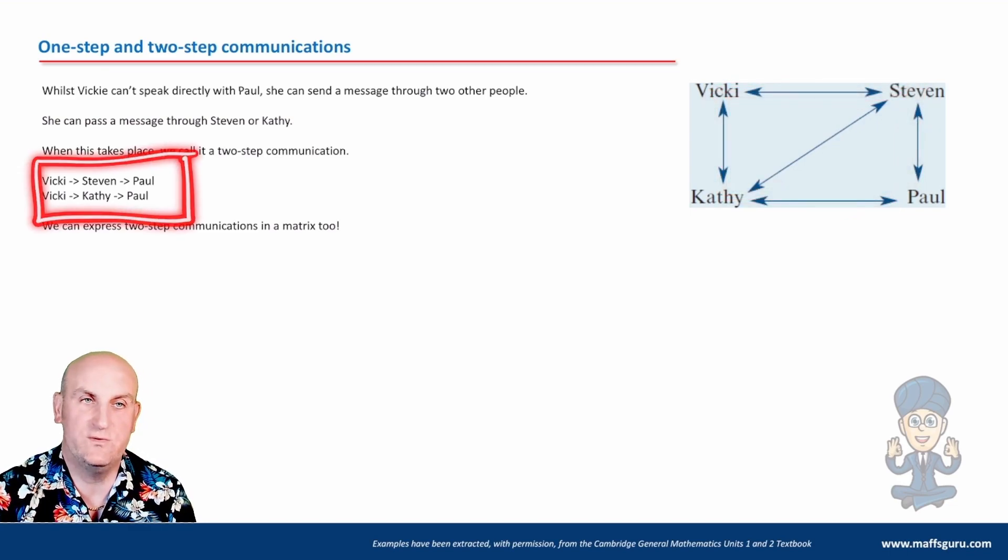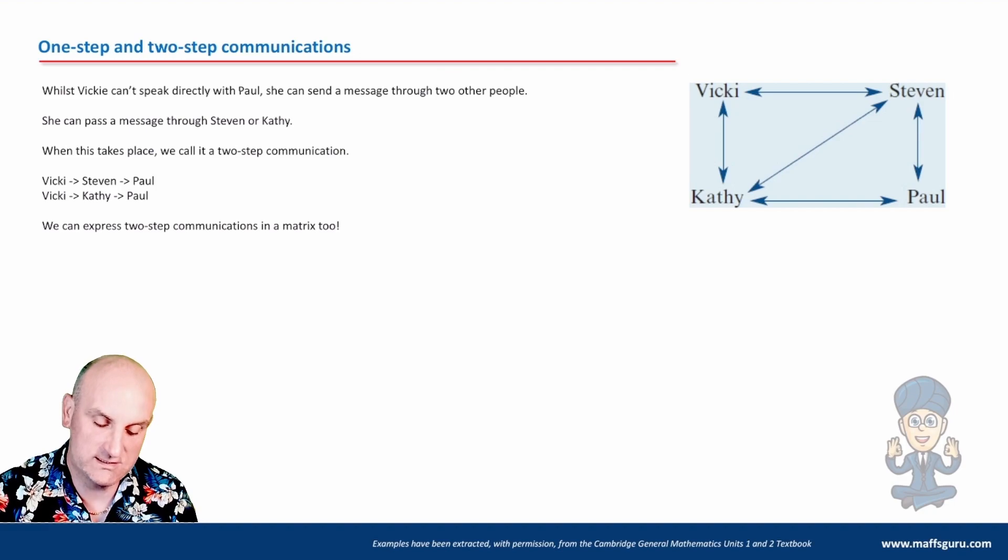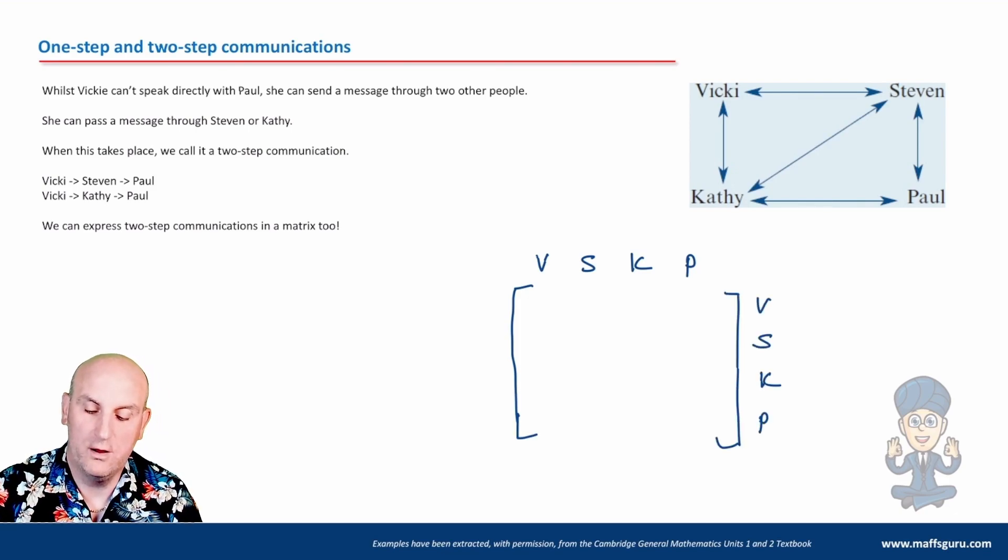And notice the way they are written. It's written with the arrows, the Vicky, then the arrow, then Stephen, then arrow, then Paul. These are two-step communication matrices, which we can actually describe in a matrix as well. So let's worry about what it's called in a moment. So what have we got here? Vicky, Stephen, Kathy, Paul. Vicky, Stephen, Kathy and Paul.